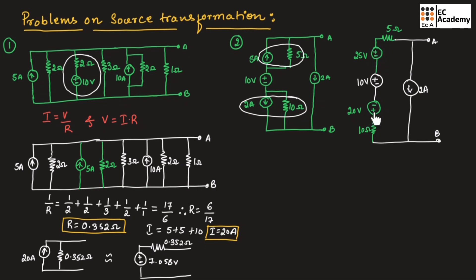As you can see, 25 volts and the 5 ohm resistor are connected in series, and 20 volts and the 10 ohm resistor are connected in series. For this voltage source we have written the polarity as positive and negative because this current source is moving upwards, and for this voltage source the polarity is negative and positive because this current source is moving downwards. These polarities are very important for simplification.